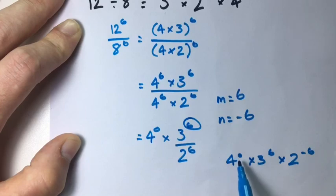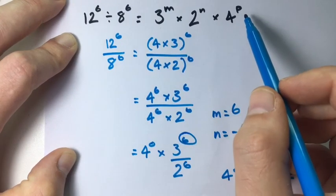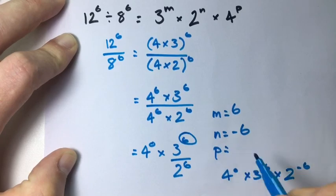Now the last variable we need to find is p. So 4 to the p is what? 0.